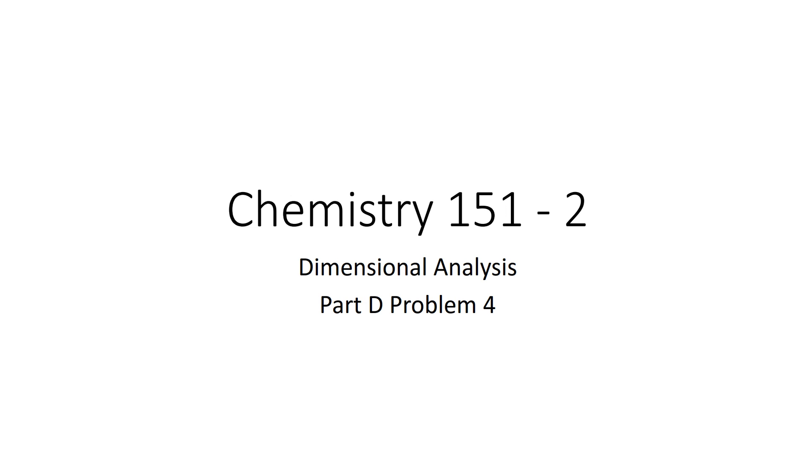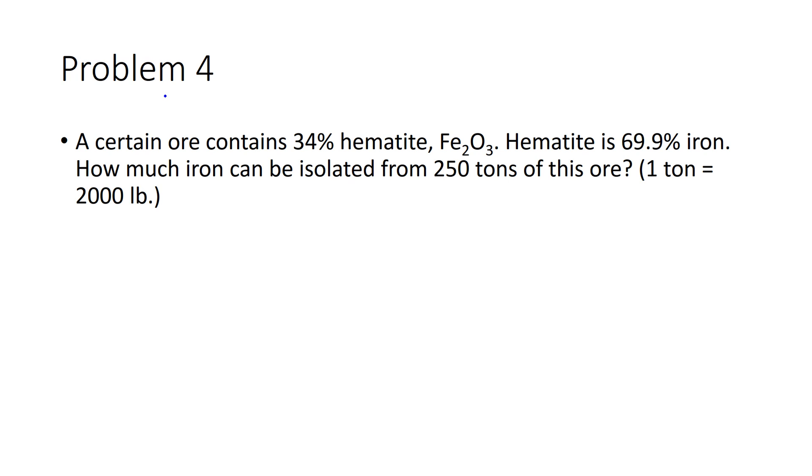Welcome guys, it's James, and today we're going to be going over problem 4 of part D in the chemistry 151-2 dimensional analysis worksheet. The problem reads: a certain ore contains 34% hematite, Fe₂O₃. Hematite is 69.9% iron. How much iron can be isolated from 250 tons of this ore?